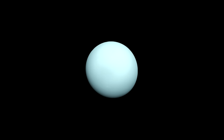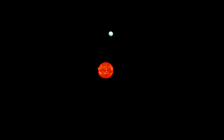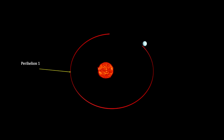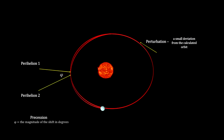But first, Mercury. The planet Mercury's orbit test for Einstein's general relativity theory actually starts with the planet Uranus, discovered by William Herschel in 1781. By the early 1800s, it was understood that planetary orbits were elliptical, with small deviations called perturbations, and that each orbit's closest approach to the Sun, called a perihelion, shifted slightly over each orbit. This is called precession.